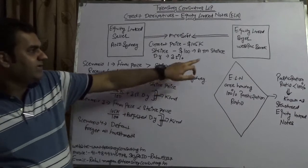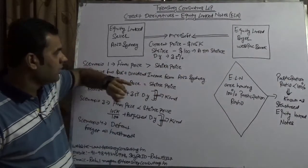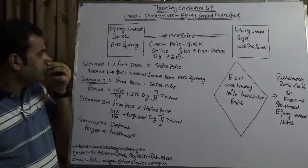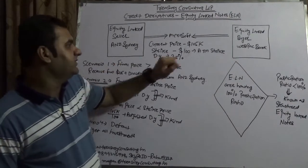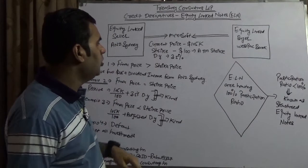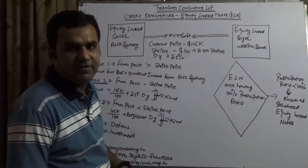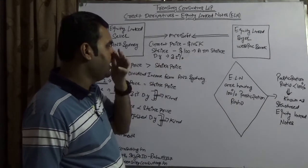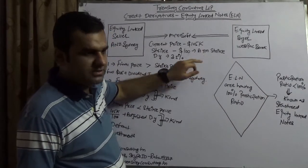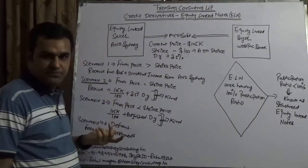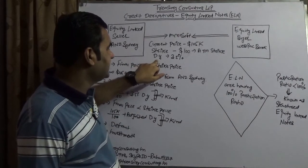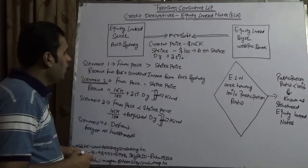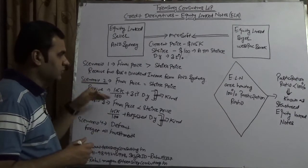Take an example: suppose you have an equity-linked note buyer who is Westpac, an Australian bank, and here you have ANZ Sydney. They are betting on an American company, Microsoft. Microsoft has a note whose current value is 105K, meaning 105,000 dollars. The strike rate agreed is 100 — we are taking an at-the-money strike. The principle of moneyness matters here as well. The dividend yield (DY) is assumed to be 3.5 percent.